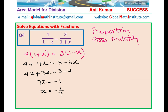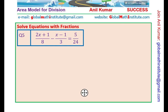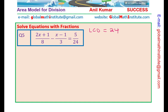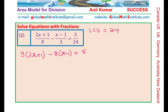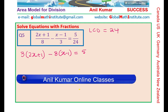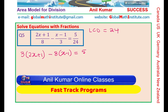Question 5 is: 2x plus 1 over 8, minus x minus 1 over 3, equals 5 over 24. Clearly the lowest common denominator is 24. Multiplying each term by 24: the 8 cancels and we multiply (2x plus 1) by 3; the 3 cancels and we multiply (x minus 1) by 8; and on the right-hand side 24 cancels leaving just 5. This approach saves a lot of time once you understand the process.